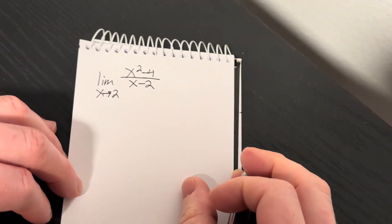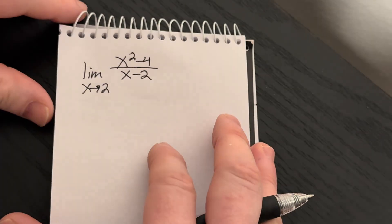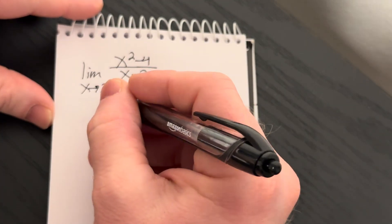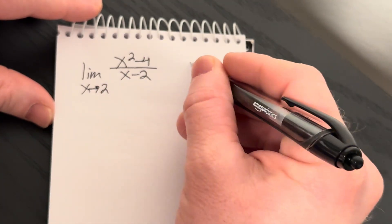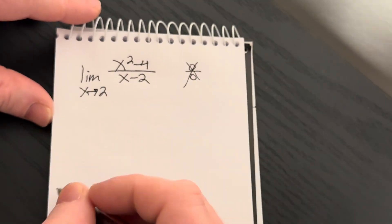This is just a very basic calculus 1 limit. Whenever you're trying to evaluate a limit, always try to plug the number in. If you do that, you see you get 0 over 0 in this case, so that's no good.